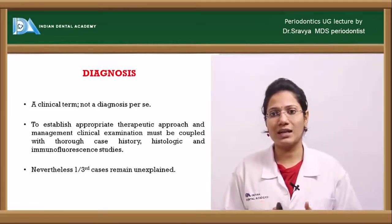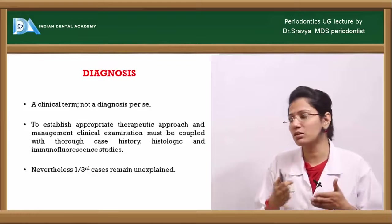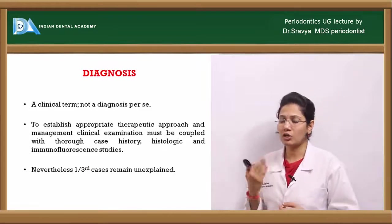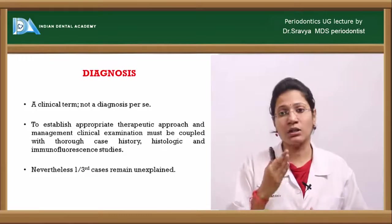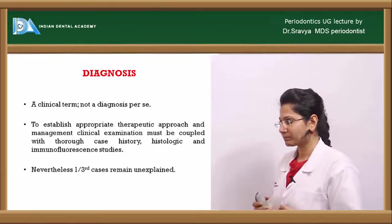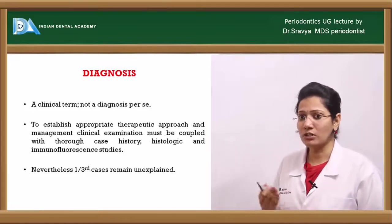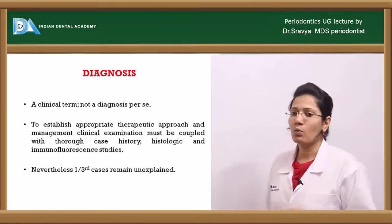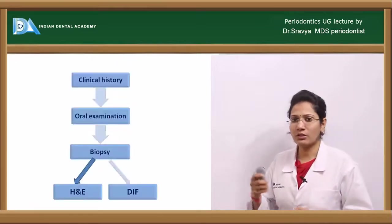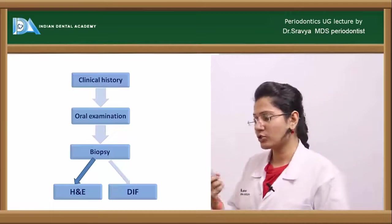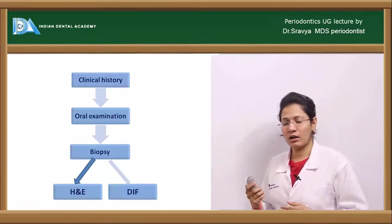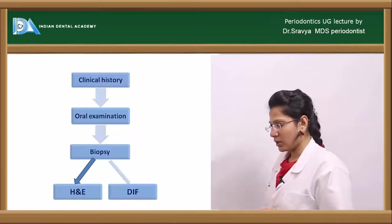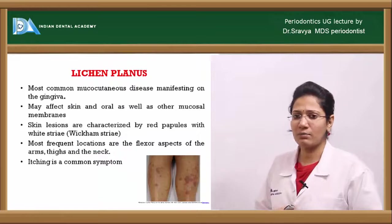Desquamative gingivitis is a clinical manifestation and not a diagnosis per se. To establish an appropriate therapeutic approach, clinical examination and thorough history must be coupled with medical history, histological studies, and immunological reports. One third of cases still remain unexplained. After clinical history and oral examination, a biopsy is taken and sent for either immunohistochemistry, direct immunofluorescence, or H&E staining.